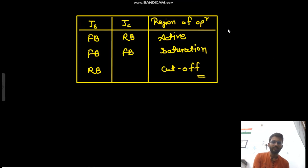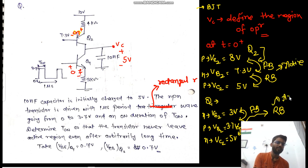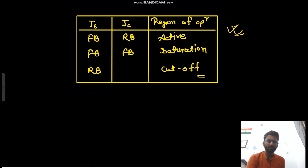You know this concept: if the emitter junction is forward biased and the collector junction is reverse biased, the transistor will be in the active region. If both are forward biased, it would be in the saturation region. If the emitter junction is reverse biased, it would be in the cutoff region. Here we have forward and reverse, so both Q1 and Q2 are in the active region — and we have to maintain this condition.